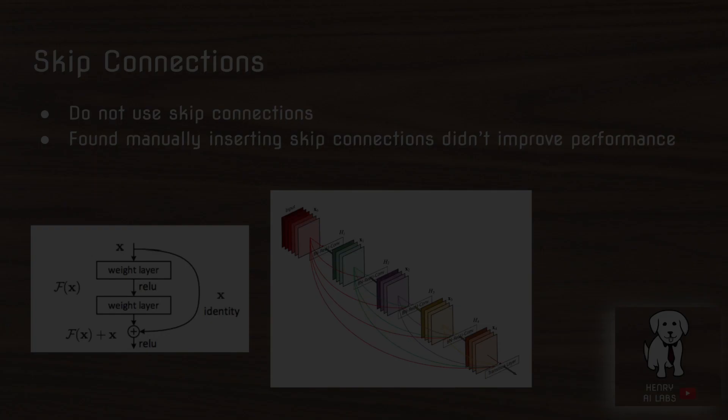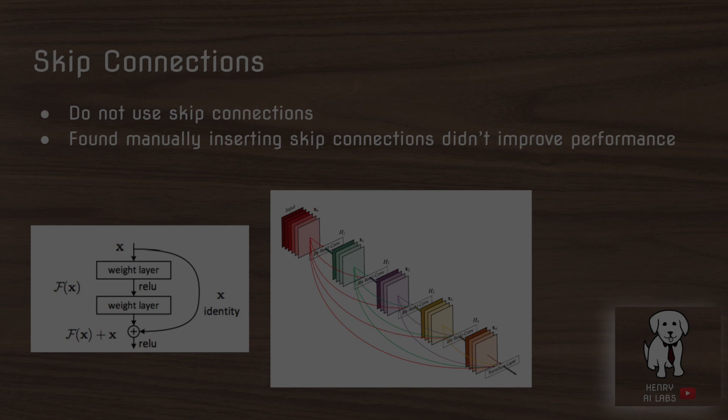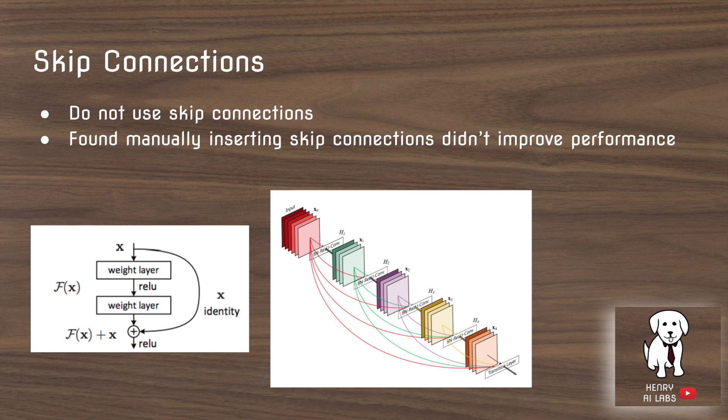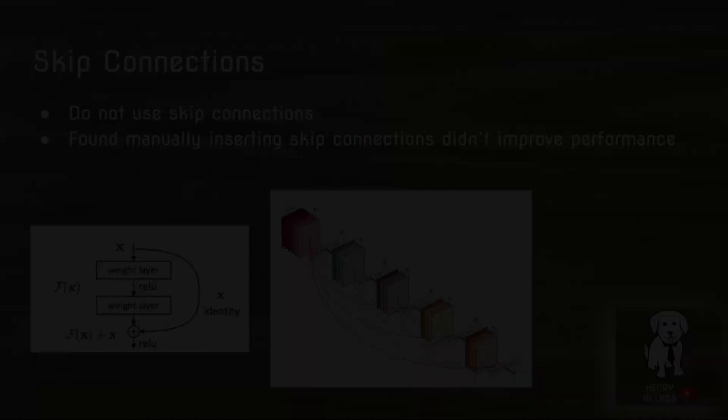One interesting finding concerns skip connections, which work well in networks like ResNet and DenseNet. However, NAS achieves its performance by repeatedly concatenating layers without any skip connections. When skip connections were manually added after training, they did not improve performance.